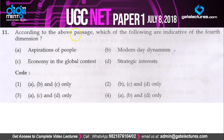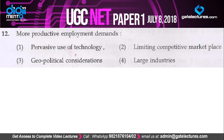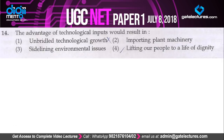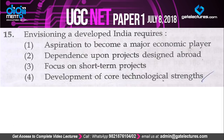For the RC questions: which of the following are indicative of the fourth dimension? The answer is aspirations of people, economy in the global context, and strategic interest — option 3. More productive employment demands pervasive use of technology — option 1. Absence of technology would lead to wastage of precious natural resources, low value addition, and hurting the poorest most — option 2. Advantage of technological input would result in lifting people to a life of dignity — option 1 for that question.